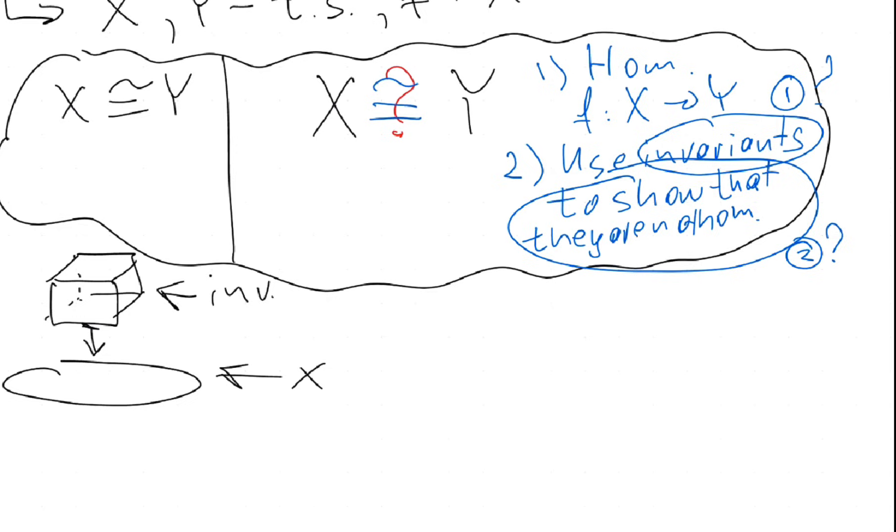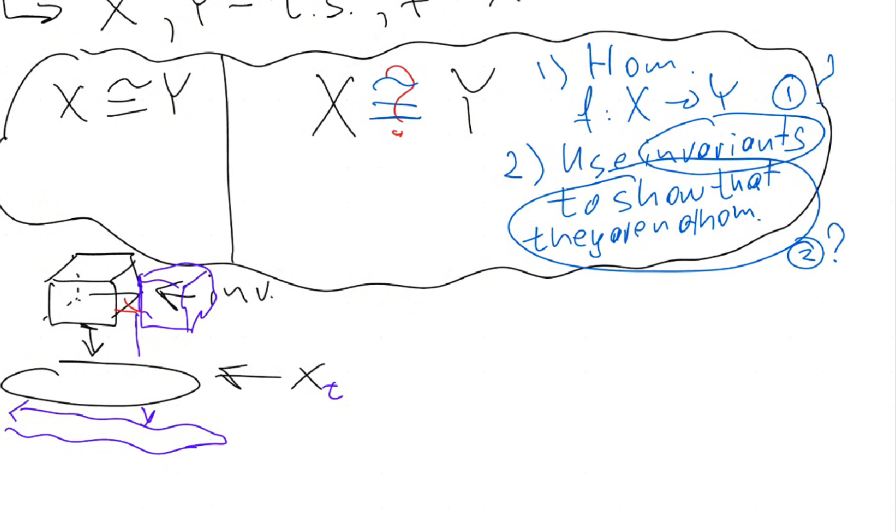And then what you can do, it's kind of called X of t - this is like the family, you can change, transform your space. When you transform your space, you also can compute invariants for the transformed space. If the values which you compute are the same, topological spaces might be not homeomorphic - but you're not sure. But if you show that invariants are not the same, that means that two spaces are not homeomorphic for sure.